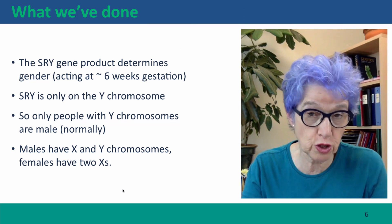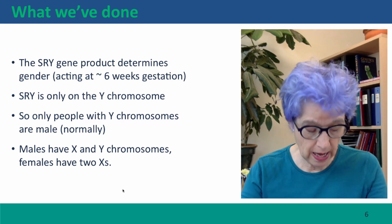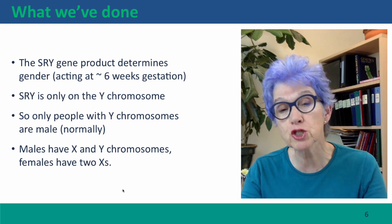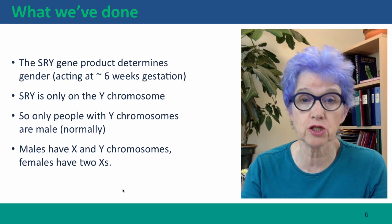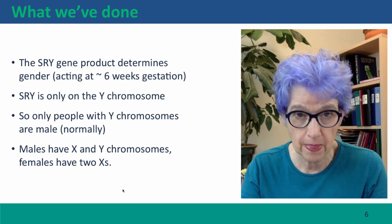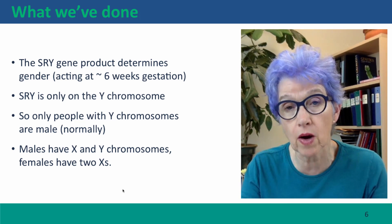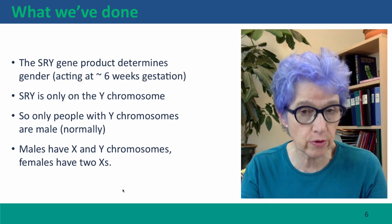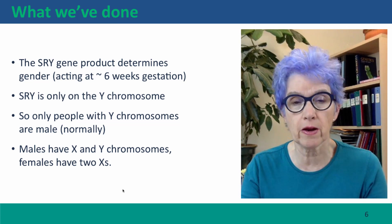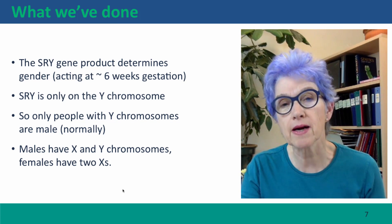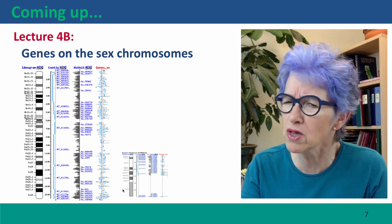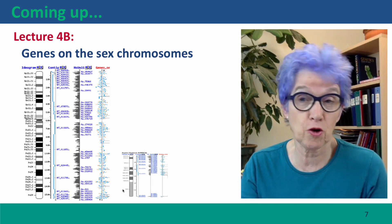That's the whole story for now. We've talked about how the SRY gene product determines gender by acting at six weeks gestation to turn on the genes that control production of sex-specific tissues. Because SRY is only on the Y chromosome, if you inherit a Y chromosome you will develop as a male; if you inherit two X chromosomes, you'll develop as a female. Coming up next, we're going to talk about what these chromosomes are and what all the genes on these chromosomes are. I hope to see you there.